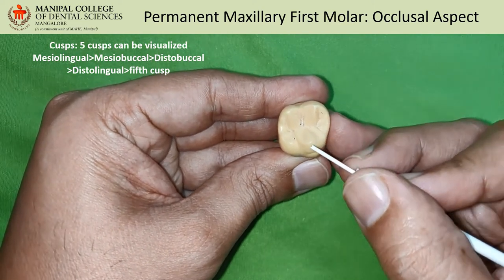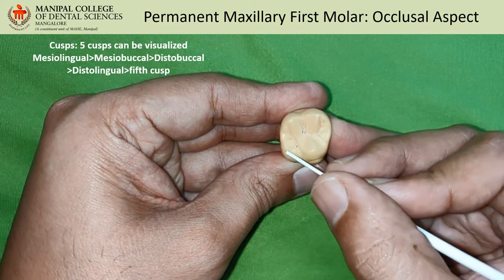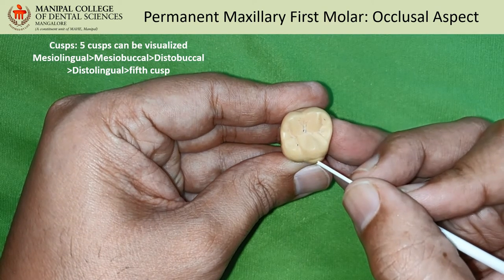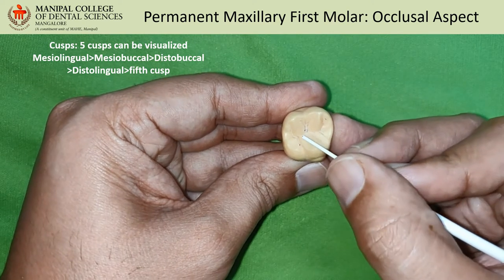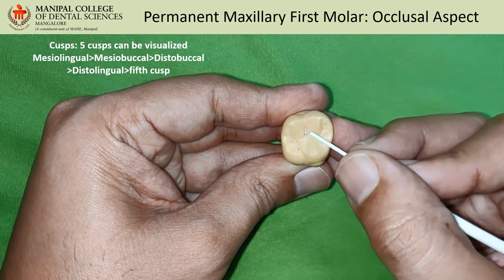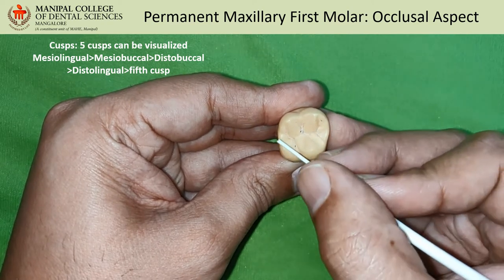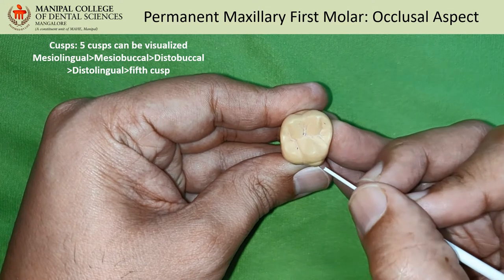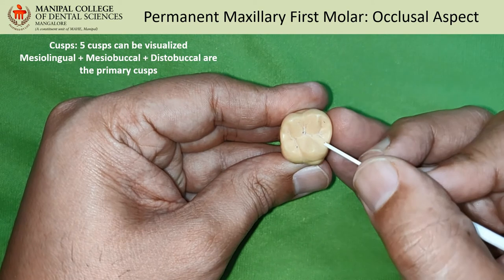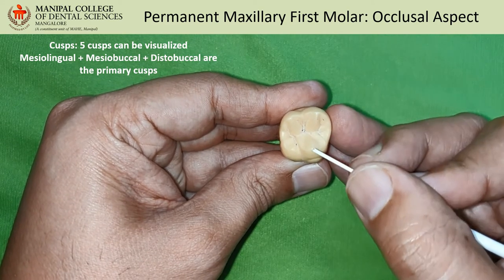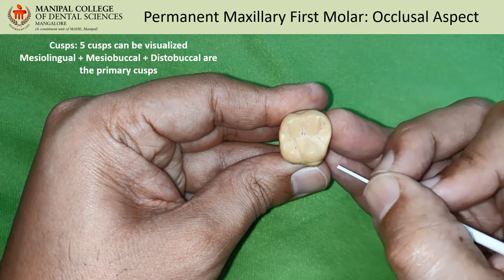When you look at this tooth from the occlusal aspect, you can appreciate five cusps: the mesio-lingual, mesio-buccal, disto-buccal, disto-lingual, and the fifth cusp or the cusp of Carabelli. In order of size, the mesio-lingual cusp is the largest, followed by the mesio-buccal, the disto-buccal, disto-lingual, and the cusp of Carabelli is the smallest, which may or may not be present.